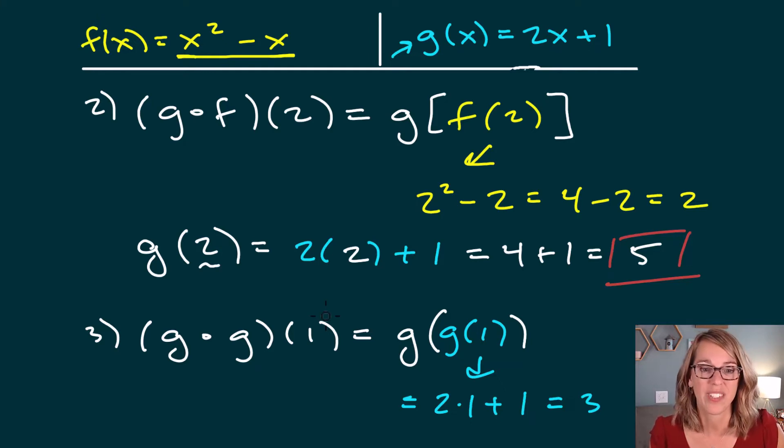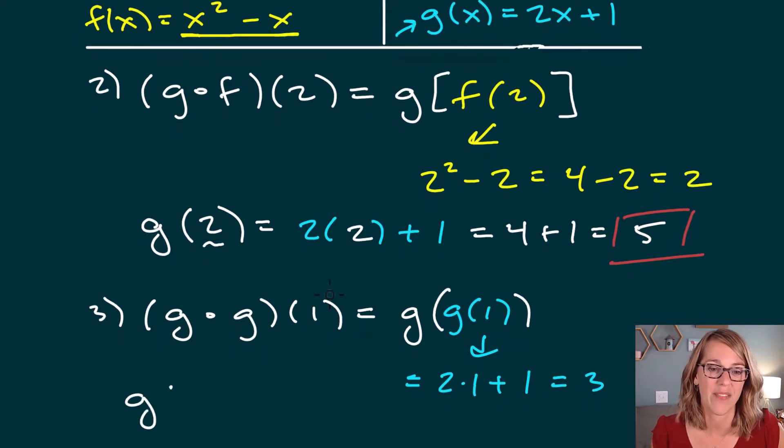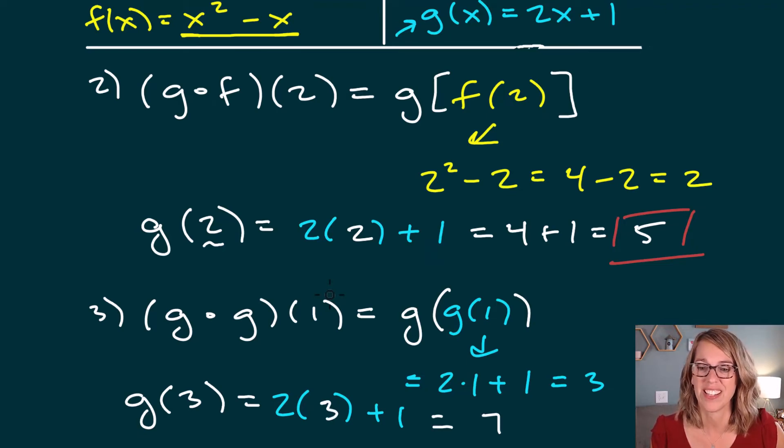So I'm finished with what's on the inside. So now I've got to evaluate g of 3. So I'm going to apply g again. g is 2 times the input. So 2 times the input plus 1. That's going to be 2 times 3 plus 1. 6 plus 1 is 7. And that's our answer. You are doing so great. The next video is going to show you how to do compositions with tables. Take a look at that one. And thank you so much for watching.